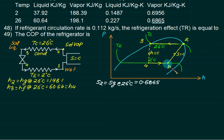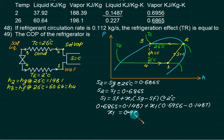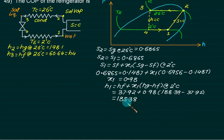S2 is same as S1, but point 1 is wet. Since 1 is wet, we can write this value equals Sf plus X times Sfg. Sfg equals Sg minus Sf at 2 degrees Celsius. At 2 degrees, Sf is 0.1487, Sfg is 0.6956. Solving gives dryness X1 equals 0.98. H1 equals Hf plus X1 times Hg minus Hf at 2 degrees. This equals 37.92 plus 0.98 times 188 minus 37.92, giving 185.38.